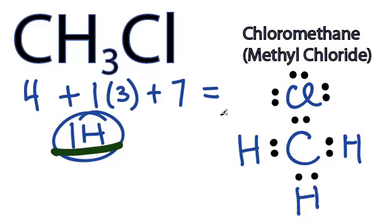So we've used all 14 valence electrons. Each of the atoms has a full outer shell. We're done with the Lewis structure for CH3Cl. This is Dr. B, and thanks for watching.